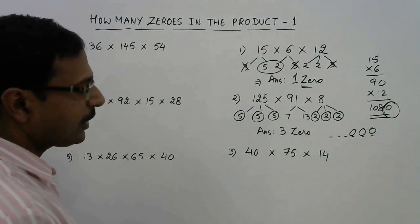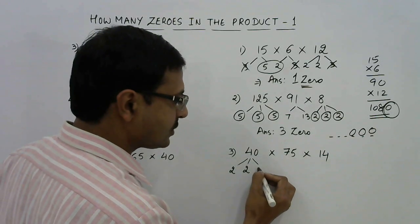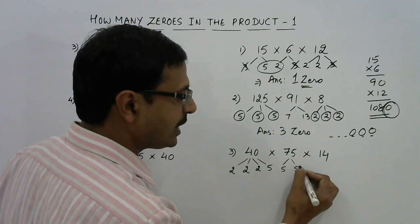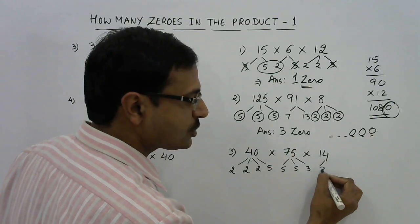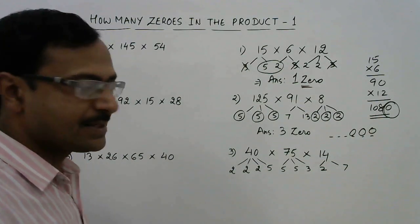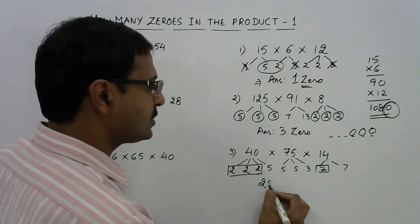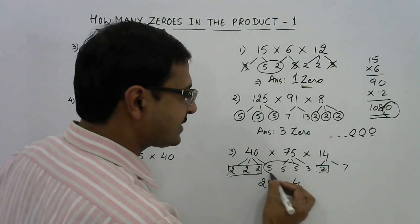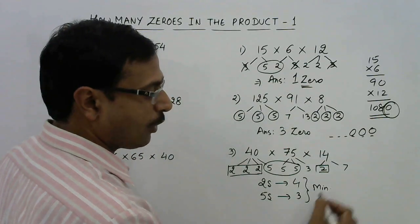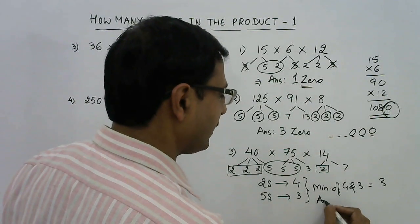Now see: 40 = 2 × 2 × 2 × 5 (i.e., 8 × 5); 75 = 5 × 5 × 3; 14 = 2 × 7. How many twos are here? Three from 40 and one from 14, so four twos. How many fives? Three fives (one from 40 and two from 75). The minimum of 4 and 3 is 3, so our answer is 3 zeros.